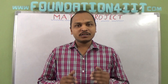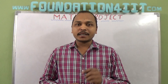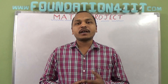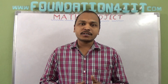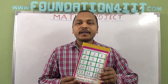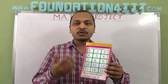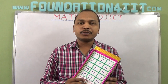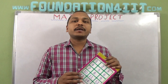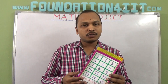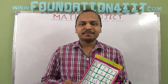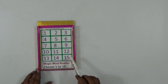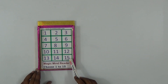Welcome to the educational channel. In this video, I'll explain a simple math project — a math puzzle — and using this we can understand the concept of permutations and combinations. Here is a magic mind reader. By choosing any one number from 1 to 15, I can tell you directly what number you chose without asking.